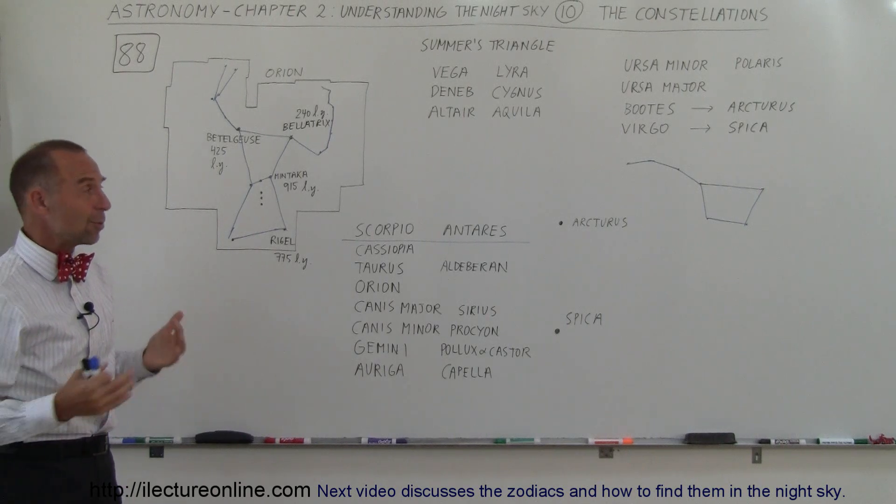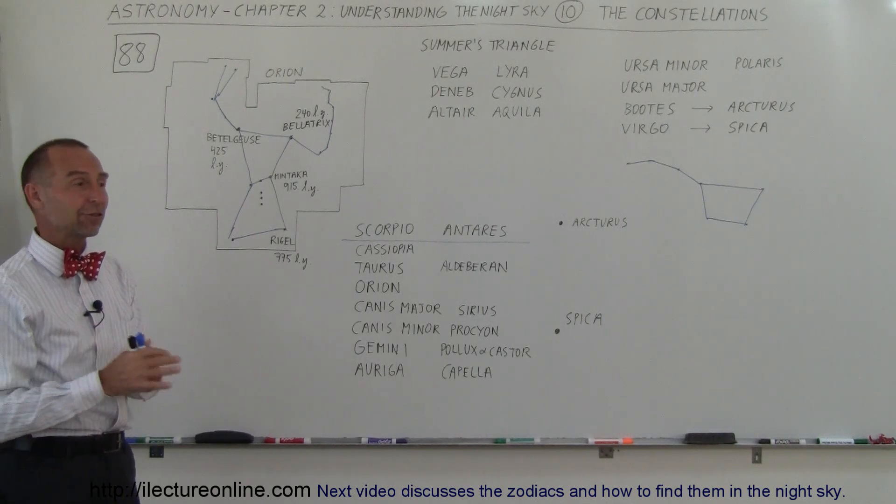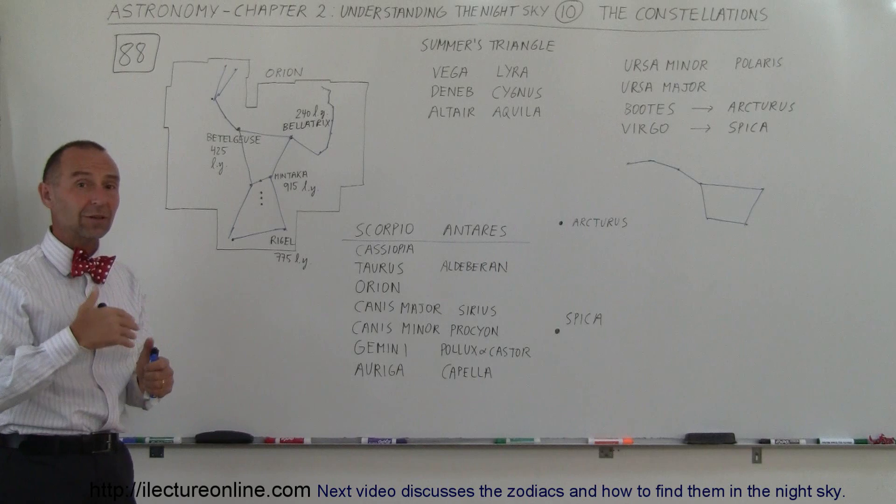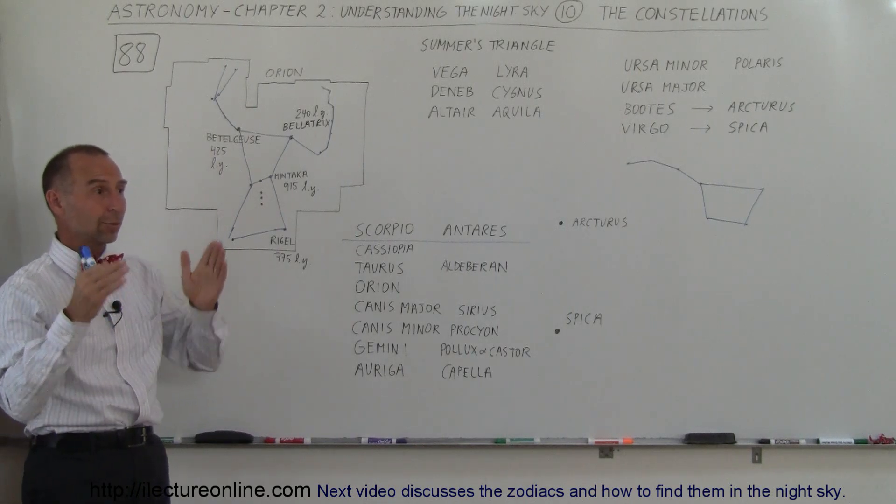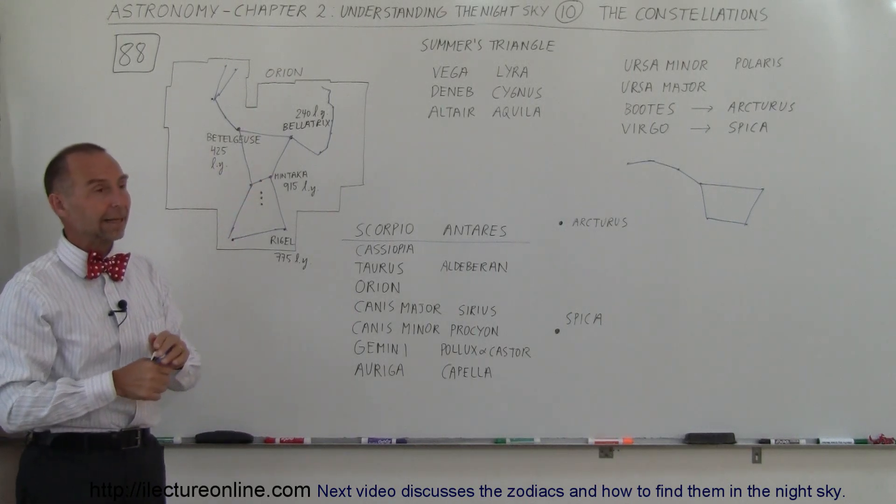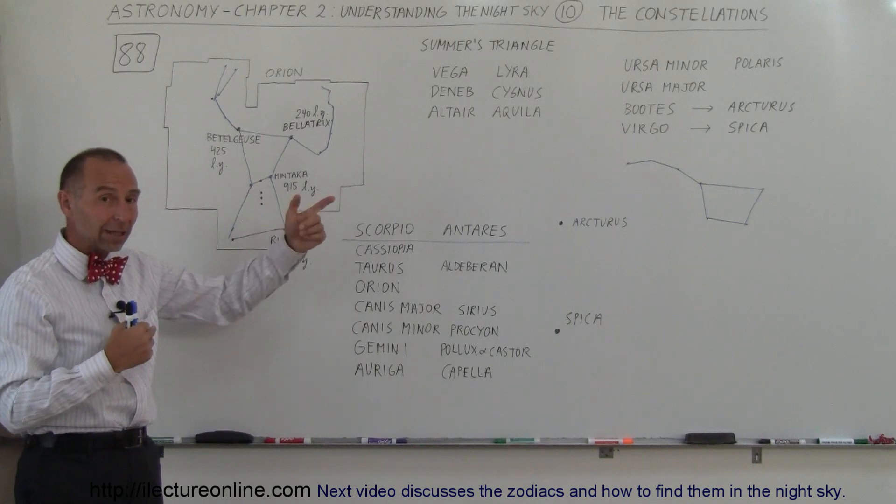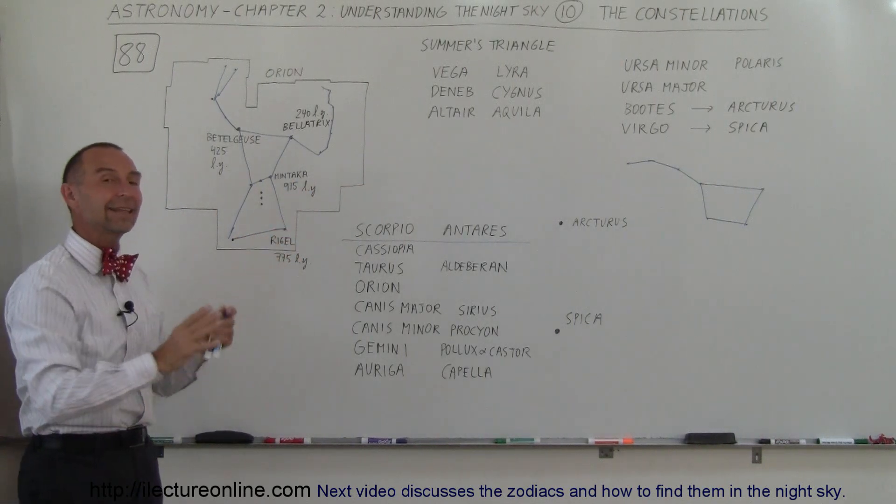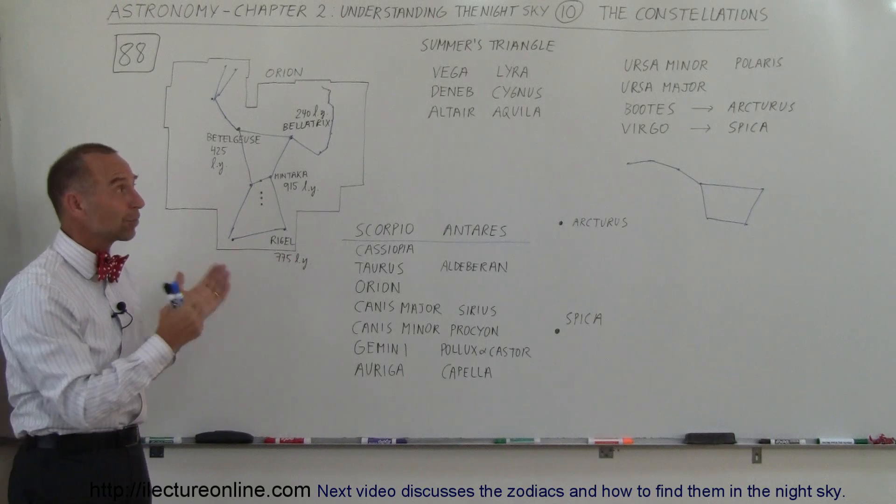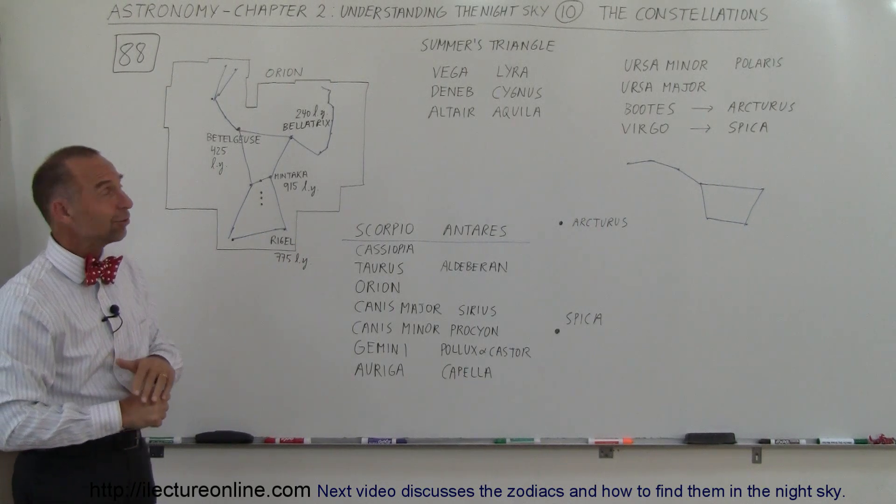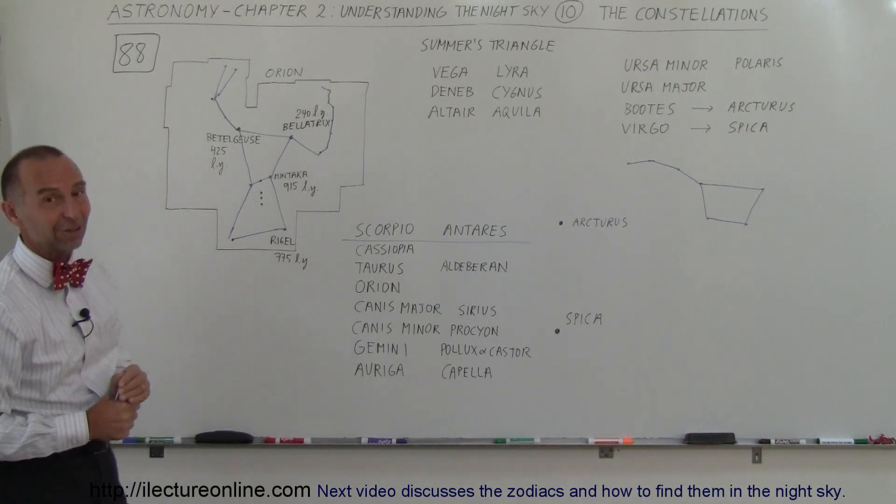So, constellations, do we still need them? We definitely do. It's a great way for us to be able to find things. If you want to tell somebody else, oh, you should take a look with your telescope, look in that direction. Sometimes you can tell them, look in that constellation, look at that third star from the left, and that kind of thing. It's a great way to find things. So, constellations, still very much in use, and 88, cover the entire sky.